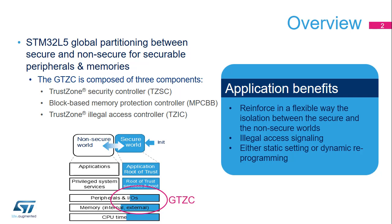This GTZ-C training module is composed of three subunits corresponding to each component inside GTZ-C: the TrustZone Security Controller (TZSC), the Block-Based Memory Protection Controller (MPCBB), and the TrustZone Illegal Access Controller (TZIC). In addition to assigning a secure attribute, the GTZ-C also controls the privileged attribute, which can be used even when TrustZone is disabled.